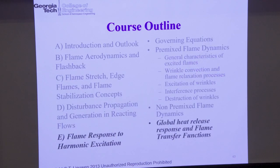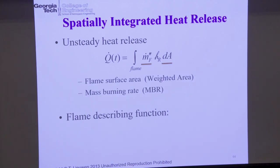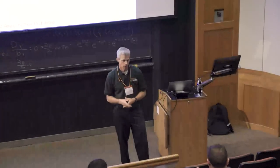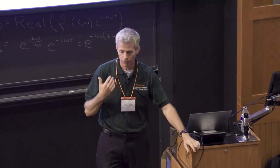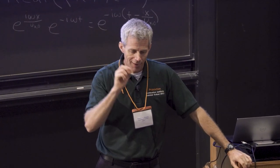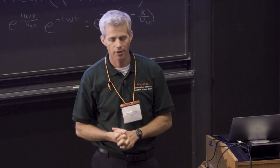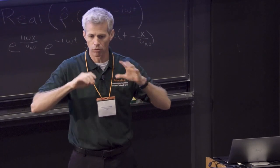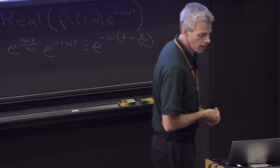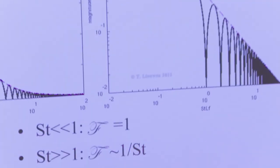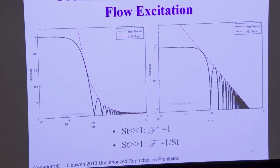I wouldn't want to leave you without a little discussion about global heat release response. We've talked about space-time dynamics — how the flame flaps and wrinkles — but we haven't talked about heat release. In many problems, what's really of interest is the fluctuations in heat release generated by the flame, as well as the spatially integrated heat release. Particularly when thinking about how flames excite acoustic waves, it's not what's happening locally that matters — it's the spatial integral. If you're taking chemiluminescence images, you want to know the total fluctuating heat release given off by that flame.